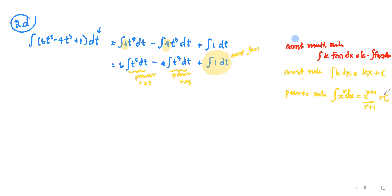For the first two terms we apply the power rule: once with r equals 5 and once with r equals 3. For the last term we apply the constant rule — not the constant multiple rule.